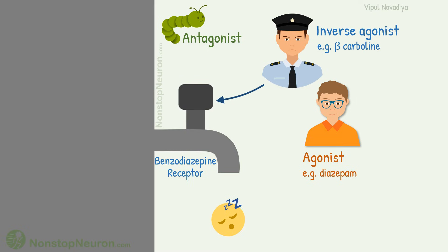Beta-carboline on the other hand is inverse agonist. It stops the calming effect of the receptor. The result is anxiety, insomnia or even convulsions.